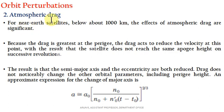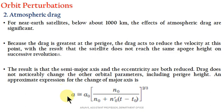Due to atmospheric drag, the satellite does not reach the same apogee height on successive revolutions because of variation in the orbital parameters. The approximate expression for the semi-major axis accounting for drag can be written as: a = a₀ × [n₀ / (n₀ + ṅ₀ × (t − t₀))], where the subscript 0 denotes the ideal reference case.